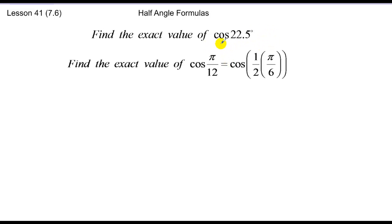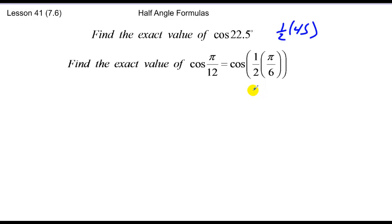For instance, the cosine of 22 and a half is half of 45. Likewise, if I have the cosine of pi over 12, that's just the cosine of half of pi over 6. Now it's not just as simple as multiplying a half to the cosine value of pi over 6 — there's an identity that goes along with it, and let's give you those identities.